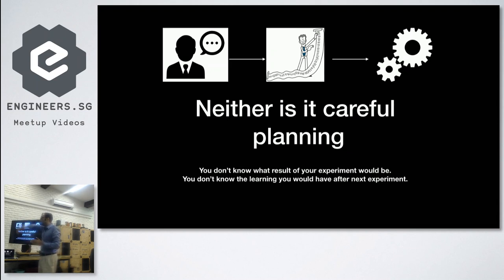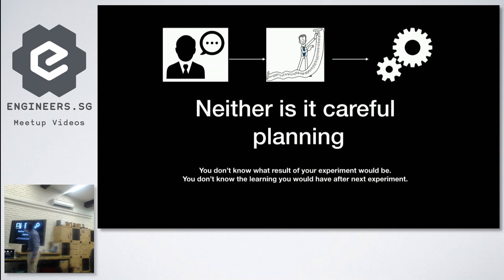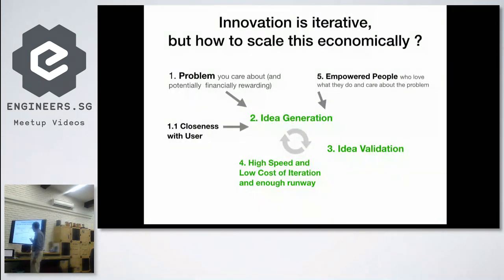Neither is innovation hard upfront planning. Every experiment gives you learning from user interaction. If you don't even know the outcome of your first experiment, how can you plan out the next 10? The users gave you requirements and you planned so well that the innovation project succeeded — that doesn't happen. You can't plan it all out because you don't know the outcome of the first experiment. Innovation is idea generation, validation, high speed and low cost of experiments, and enough runway.